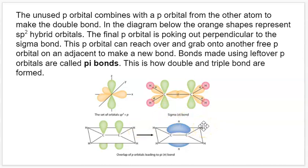The second and third bonds are not quite as strong because they're not directly in the plane. An analogy: standing next to someone, you reach out and grab their hand — that connection is strong. But then you try to reach your other hand over your head to make another connection, and they do the same. That grip over your head just isn't as strong. Pi bonds are not as strong as sigma bonds, but it's the only way to get double and triple bonds between atoms.